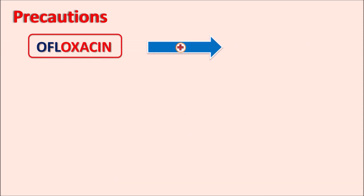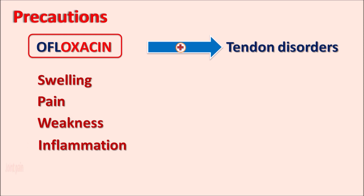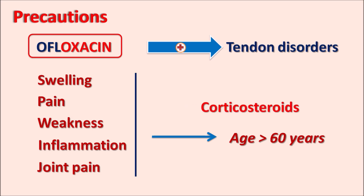Ofloxacin can also increase the risk of tendon ruptures and tendon disorders. Symptoms such as swelling, pain, weakness, inflammation at the joints, and joint pain may indicate tendon rupture, and the drug should be stopped and replaced with an alternative agent. This tendon rupture risk is common to all fluoroquinolones and is particularly elevated in patients over 60 years of age, or those under corticosteroid treatment, since corticosteroids can produce osteoporosis-like effects that further increase tendon disorders.